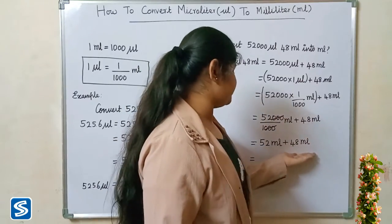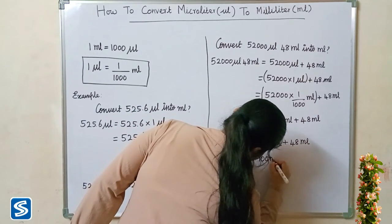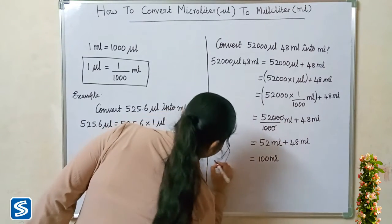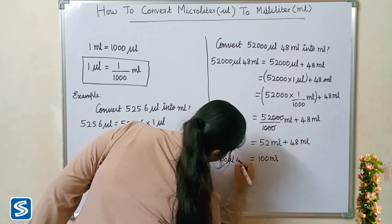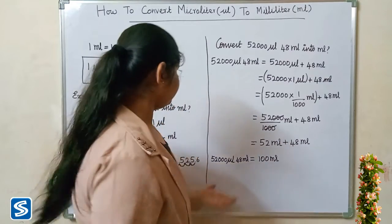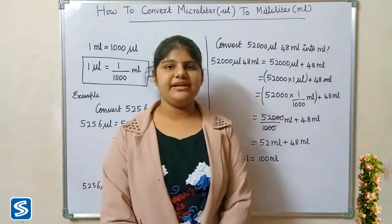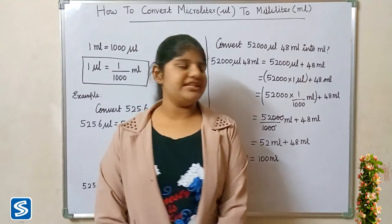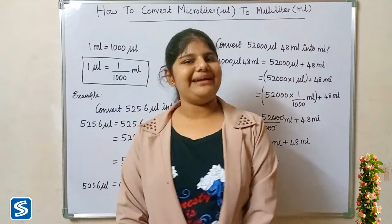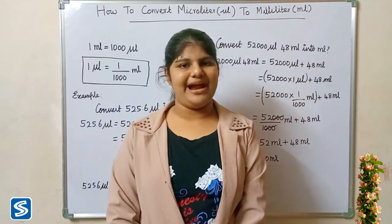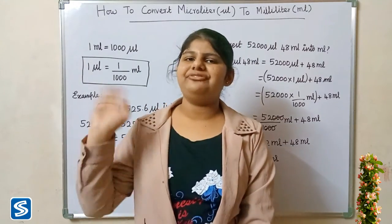So 52,000 microlitres 48 millilitres will be 100 millilitres. Hope all friends understood how to convert microlitres into millilitres. If you like my video please like, share, subscribe and press the bell button so you can receive all my updated videos. Bye friends, thank you.